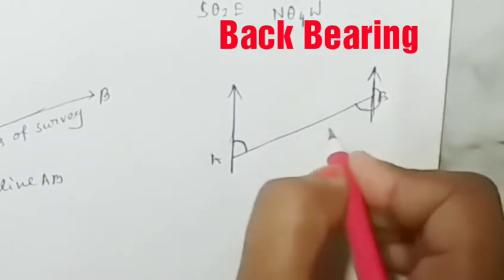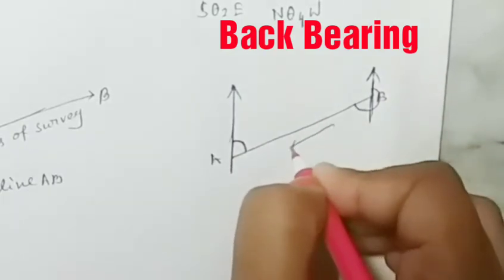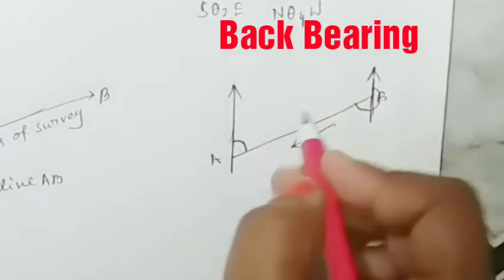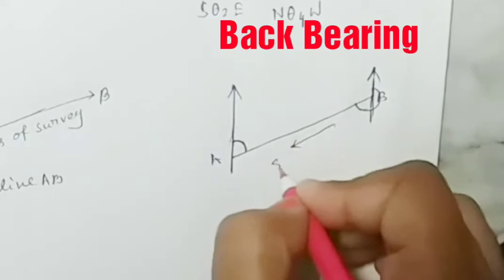This is our bearing from B to A. This is the opposite direction of the survey work. This is the survey line.